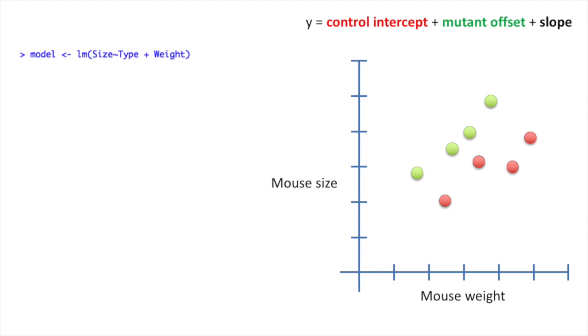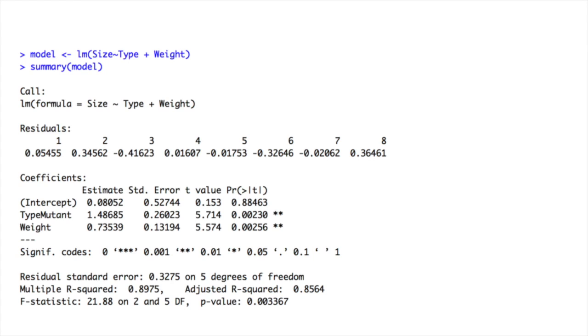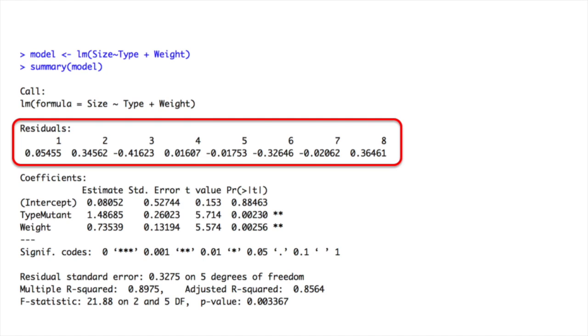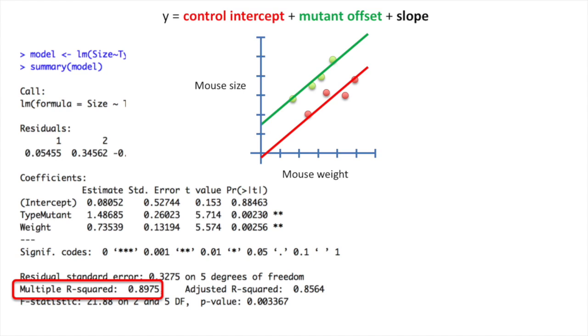We then call the Lm function. Lm stands for linear models. It'll do the least squares fit and calculate the statistics for us. And here's the summary of all that stuff that the Lm function did for us. The first thing it does is the least squares fit and then it calculates the residuals. It also calculates the R squared value for us. This is called the multiple R squared because we're fitting a rather complicated equation to the data. The adjusted R squared is the R squared value adjusted for the number of parameters in the equation that we fit to the data.